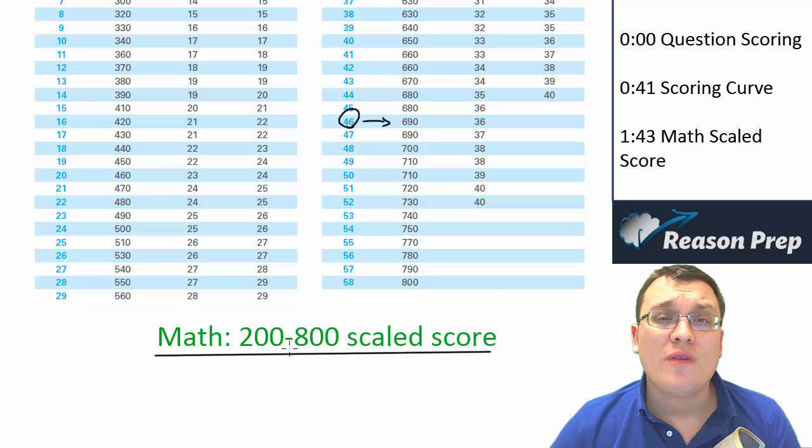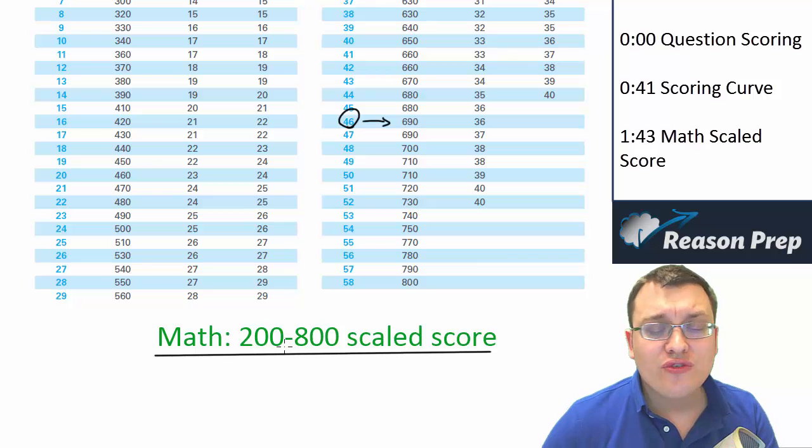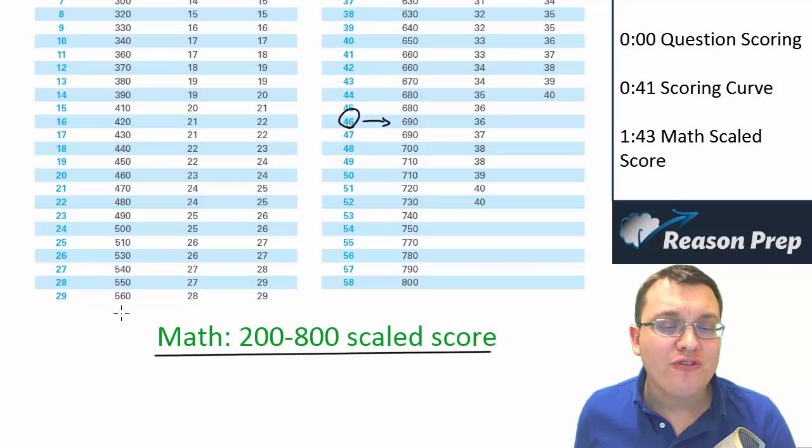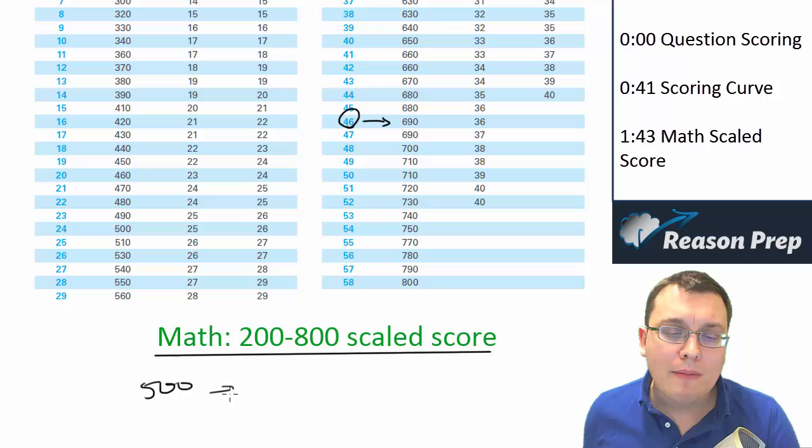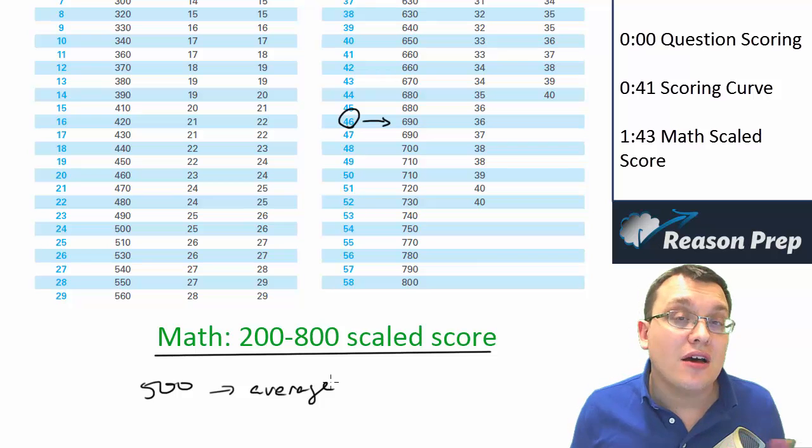We don't quite know yet what the averages will be. On the old SAT it was around 500, and I think it's fair to expect somewhere around 500 will probably be the average, and then we will learn later. I will update this course later once we have an idea of what an average score is, what a good score is, and once we have some idea of what the score might end up meaning. So all we know for now though is higher is better.